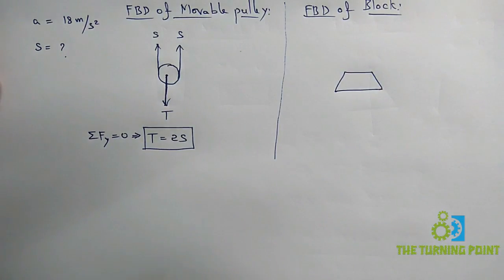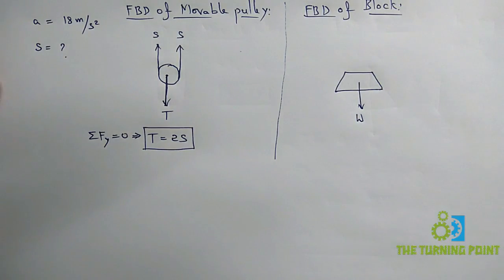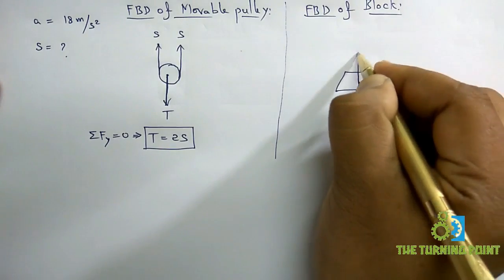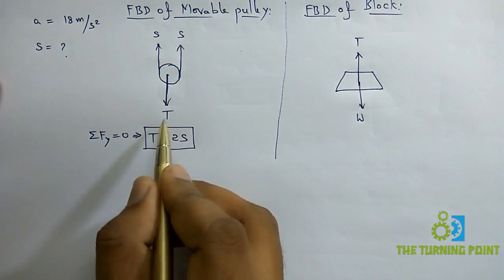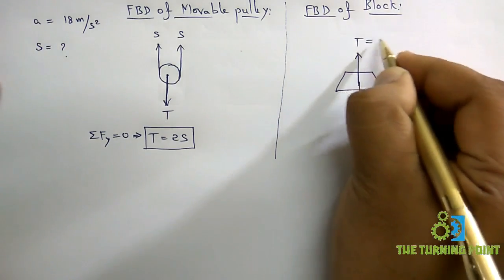First you need to represent the weight. Always weight acts vertically downwards. And next along the string there will be tensile force, considered as T. And we got the relation in terms of S, which is equal to 2S.